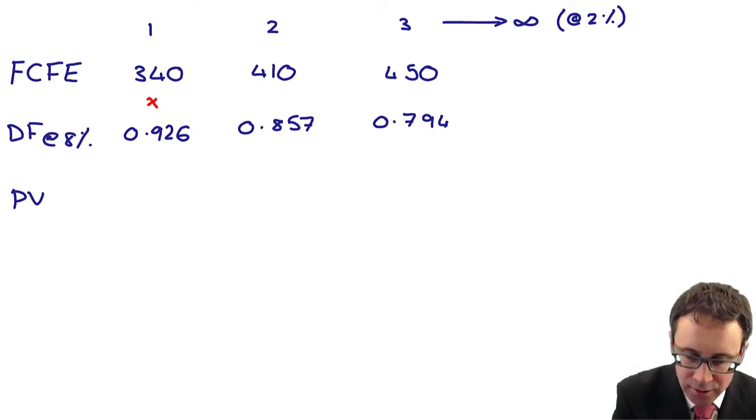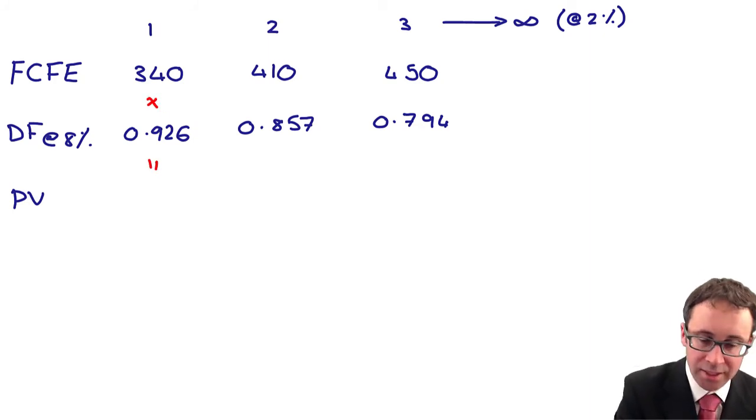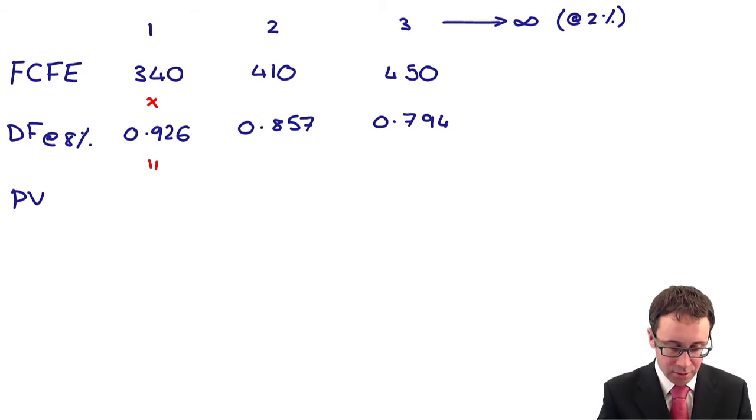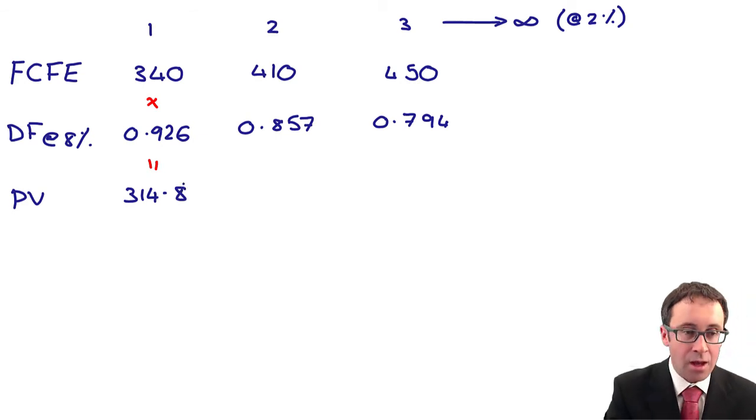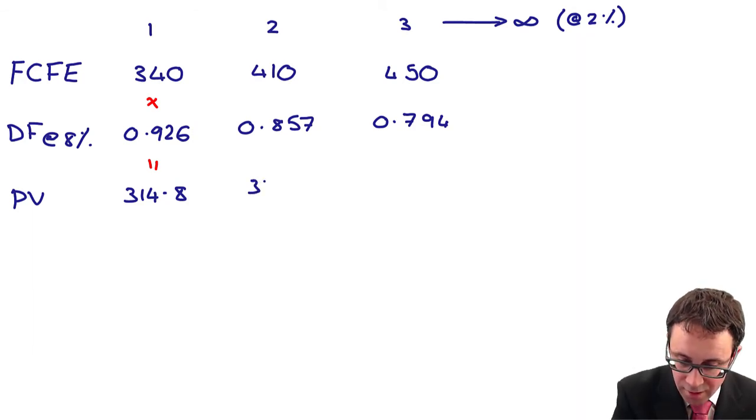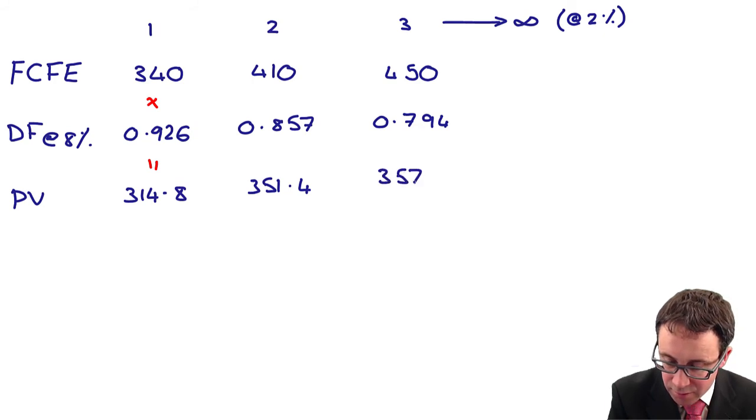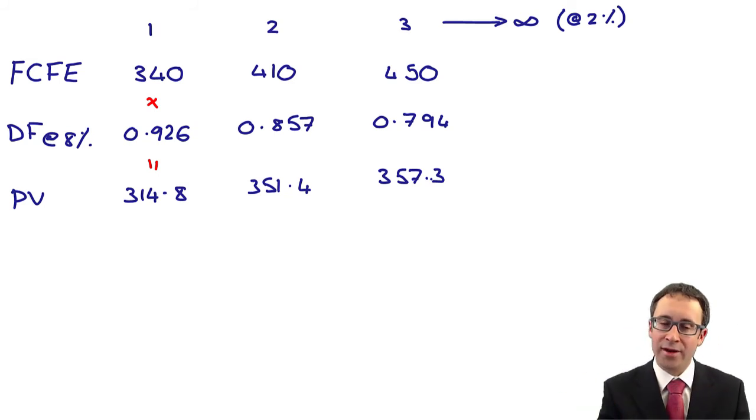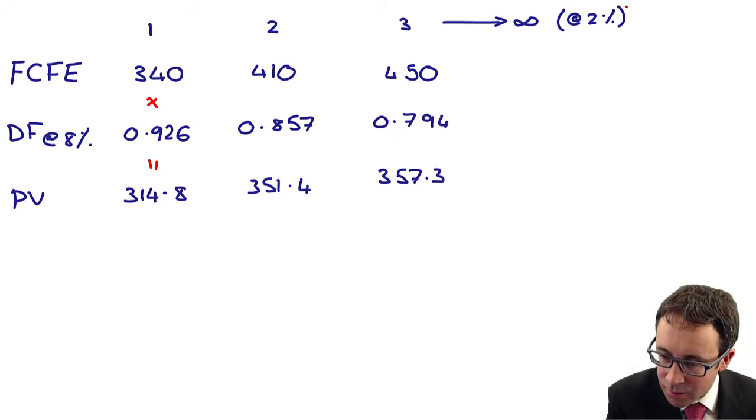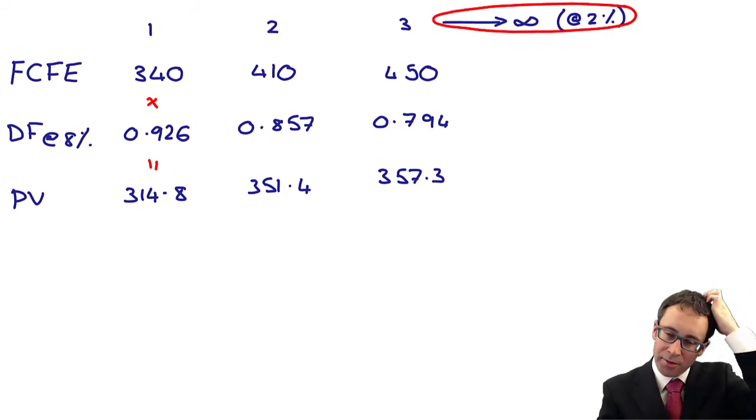To work out the present value, it's your cash flow to equity multiplied by your discount factor. 340 times by 0.926 is 314.8. Then 410 times by 0.857 is 351.4. 450 times by 0.794 is 357.3. We can work out the total present value there. However, we have ignored the fact that these cash flows are inflating to perpetuity.